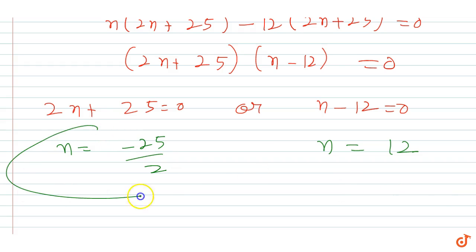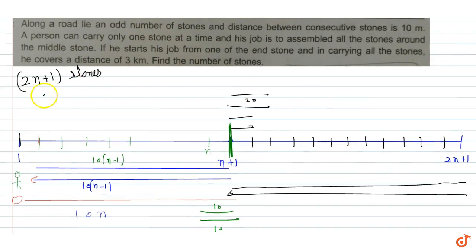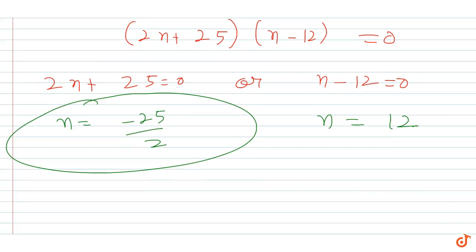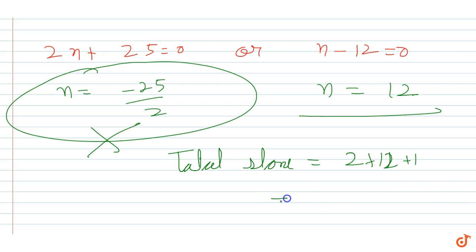Since n must be an integer, n = 12. Therefore, the total number of stones is 2n + 1 = 2(12) + 1 = 25.